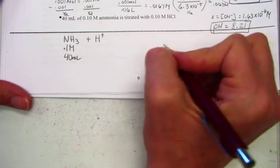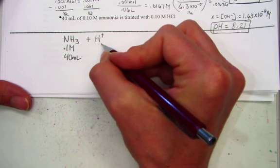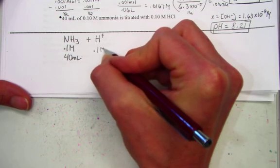And again, the chloride serves as a spectator, so let's go ahead and denote just H plus as the value of hydrogen ion, 0.1 molar.